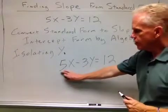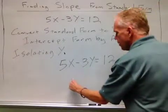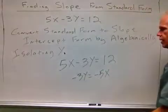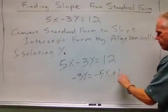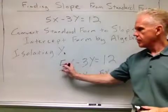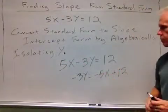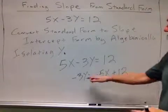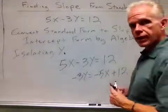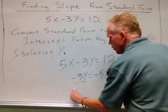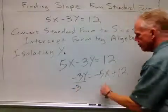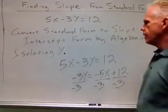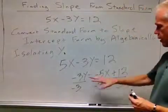The first thing I'll do is transpose the 5x. So I have negative 3y equals negative 5x plus 12. I simply took the 5x from the left side and moved it to the right side as a negative. Now that gets me closer to isolating y. There's only one more thing I need to do. I'll divide both sides by negative 3.